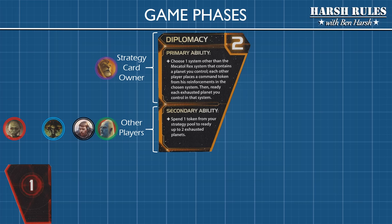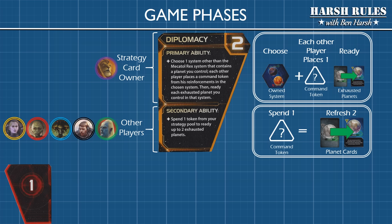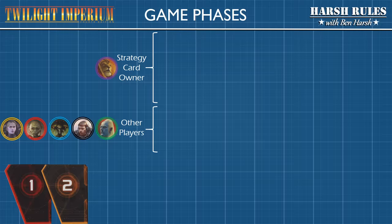Strategy card number two is Diplomacy. With Diplomacy, the owner can choose one planet that they control. Other players must place a command token from their reinforcements on that system, and then the owner can refresh all exhausted planets in the system. For the secondary ability, other players can spend a command token to refresh two of their own exhausted planets.